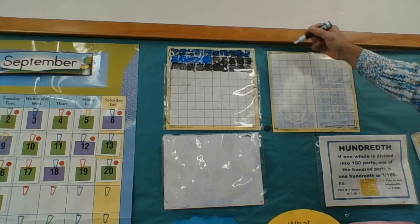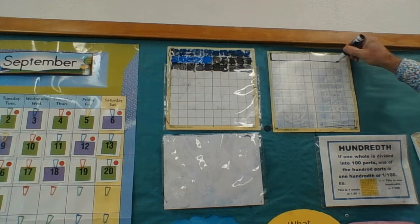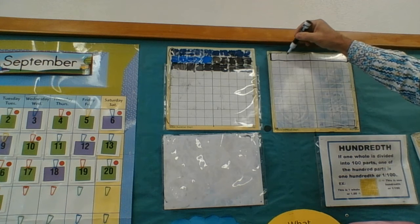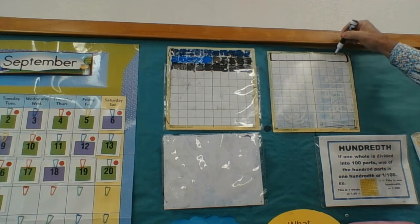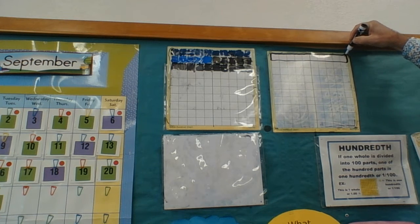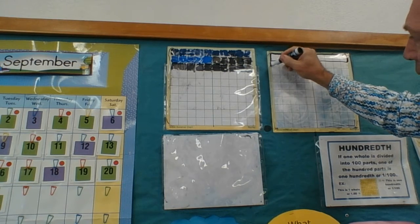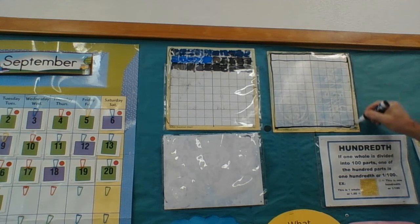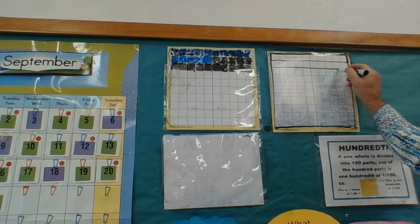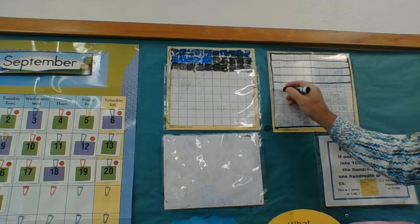Now just taking this, let's remember that each row here has 1, 2, 3, 4, 5, 6, 7, 8, 9, 10. So if I have 10 hundredths in each one of these rows, then that means that out of 100, I have 10 full rows. Can you visualize that?